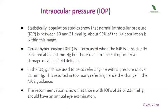Statistically, population studies show that normal intraocular pressure is between 10 and 21 mmHg, with about 95% of the UK population within this range. Ocular hypertension is a term used when the IOP is consistently elevated above 21 mmHg, but there is an absence of optic nerve damage or visual field defects. In the UK, guidance used to be to refer anyone with a pressure of over 21 mmHg, but this resulted in too many referrals, hence the change in NICE guidance.